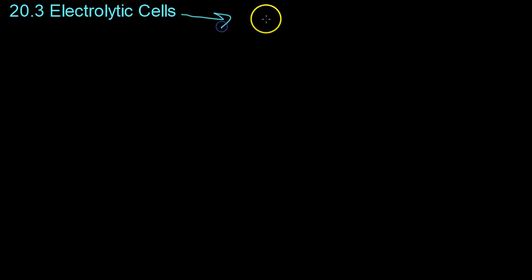Now, electrolytic cells are similar to voltaic cells in that they use redox reactions and electricity, an electric current. However, they're pretty much the exact opposite of voltaic cells in that they convert electrical energy from a direct current power source into chemical energy.